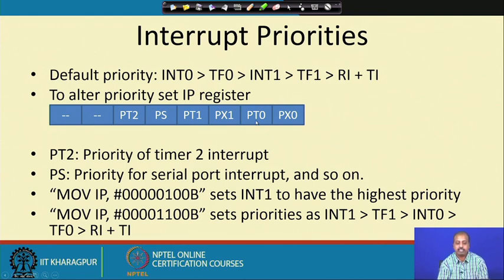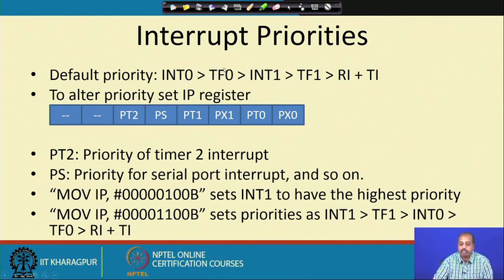Looking at the default interrupt priorities: INT0 has the highest priority, followed by TF0 (timer 0), then INT1, then timer 1 (TF1), then RI plus TI — the receive and transmit serial communication interrupts, which share a single interrupt line. If a number of interrupts occur simultaneously, the processor will first respond to INT0, then TF0, then INT1, and so on.